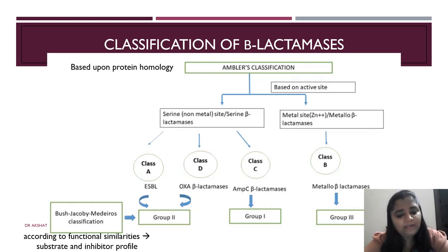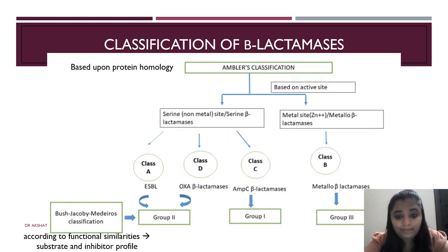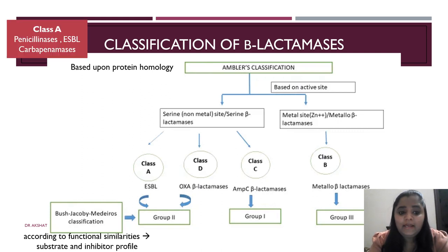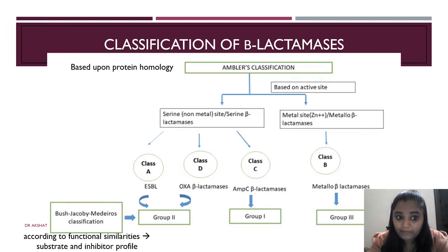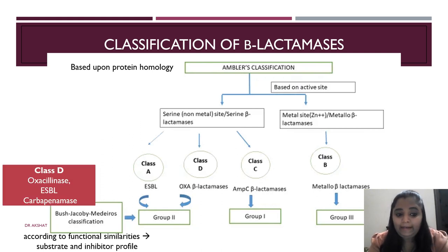What are these beta-lactamases? These are enzymes which destroy your beta-lactam antibiotics and they have been classified variously. The two important classifications to remember are the Ambler classification and the Bush-Jacoby-Medeiros classification. The Ambler classification is based on protein homology and is divided into Class A, B, C, and D. Classes A, C, and D have serine in the active site, whereas Class B has a metal ion — a zinc ion — which is why they are called metallo-beta-lactamases. Class A has penicillinases, ESBL, and carbapenemases. Class B has metallo-beta-lactamases. Class C has cephalosporinases, and Class D has oxacillinases, ESBL, and carbapenemases.